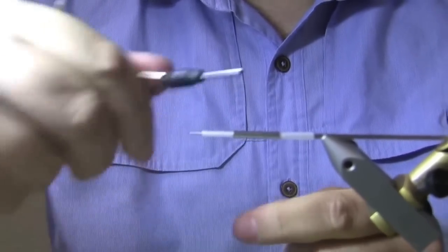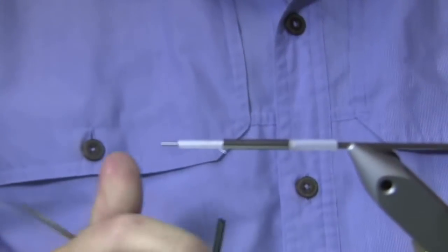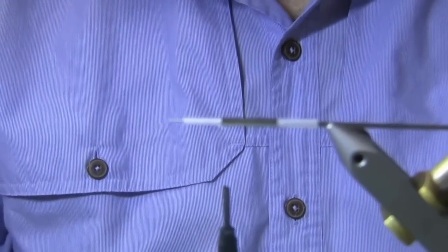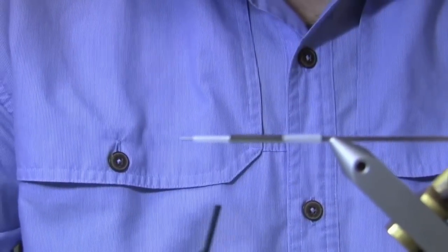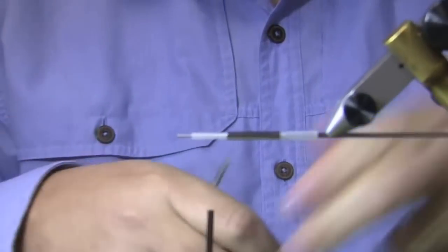And then I'm using, for the thread, I'm using the Uni Mono because we're going to paint or coat the head in clear goo. We don't want to see any white thread underneath there. The first thing I'm going to add is some pearl flashaboo. We're going to do the belly first of this fly.